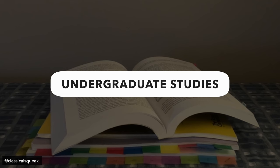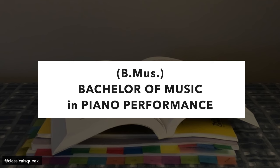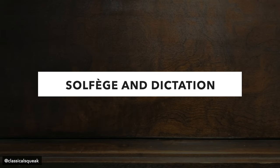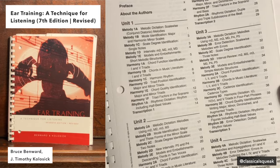On to undergraduate degree. For the Bachelor of Music in Piano Performance, we'll start with mandatory courses. I had two years of solfege and dictation, which were full-year courses. The dictation part had all the students in the same room, and the professor played intervals, chord progressions, rhythms, melodies, etc. for us to notate.